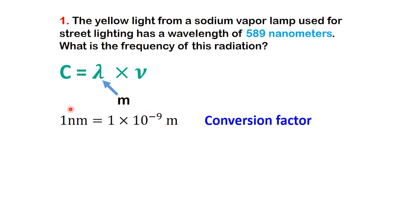Our conversion factor is 1 nanometer is equal to 1 times 10 to the minus 9 meters. We start with 589 nanometers and multiply by a fraction that has nanometers in the denominator and meters in the numerator. Nanometers cancel out, leaving us with lambda equals 5.89 times 10 to the power of minus 7 meters.